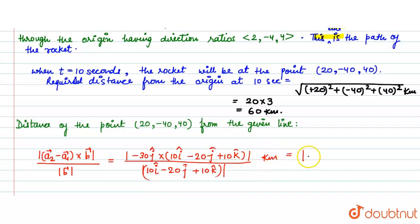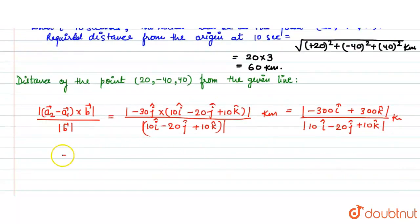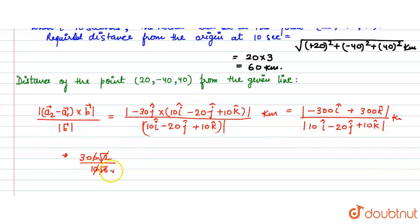Now solving this, the cross product gives -300i + 300k. In the denominator we have |10i - 20j + 10k|. Simplifying: the numerator becomes √((-300)² + (300)²) = 300√2, and the denominator becomes √(10² + 20² + 10²) = 10√6. Dividing 300√2 by 10√6 gives 30√2/√6 = 30/√3 = 10√3 km. So the distance from the given line is 10√3 km. Thank you.